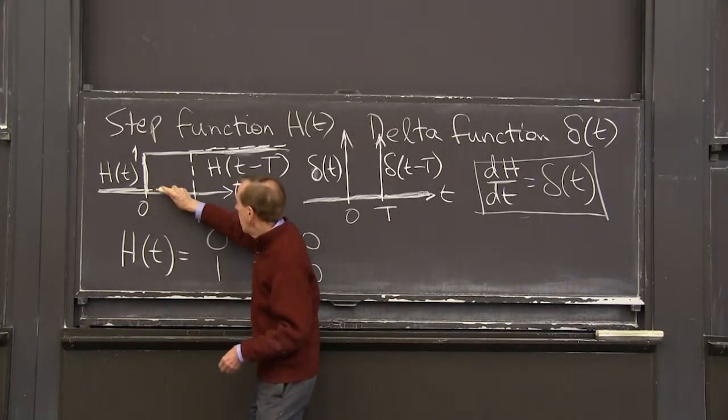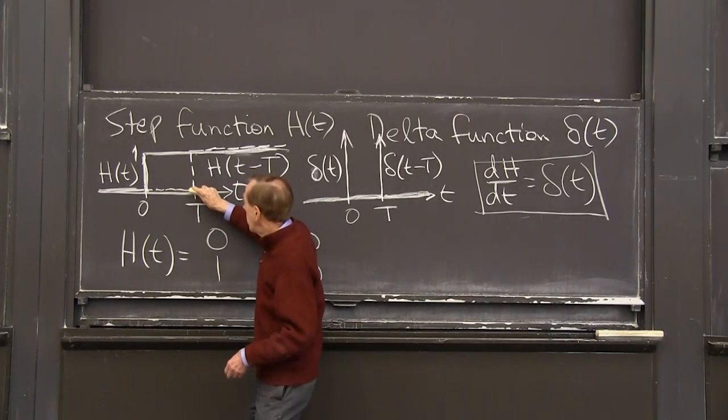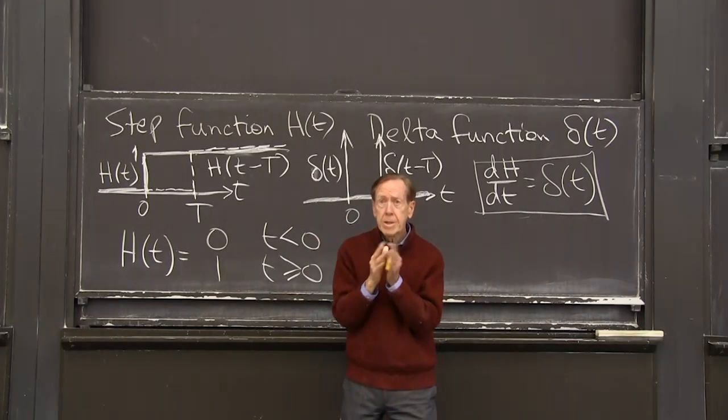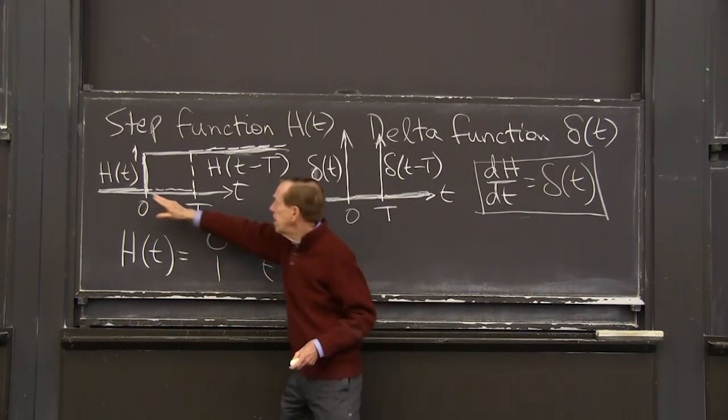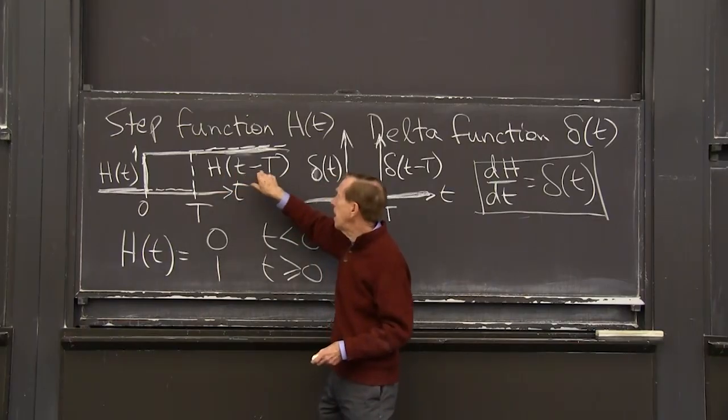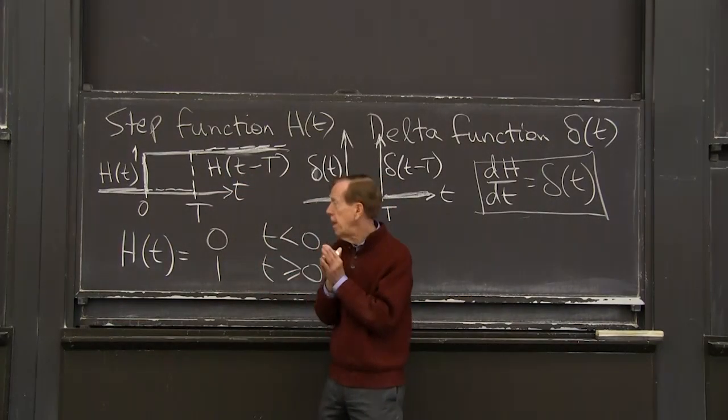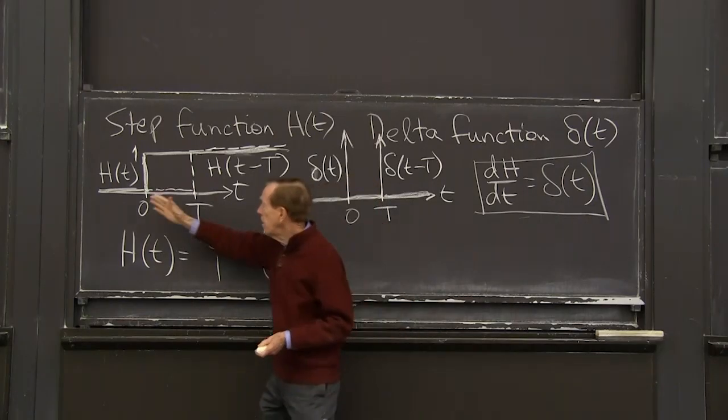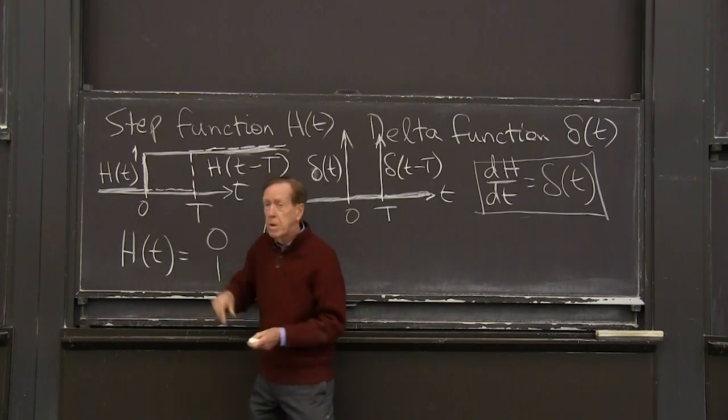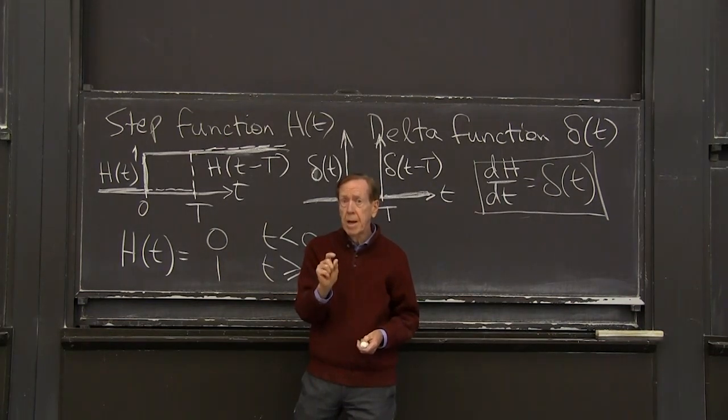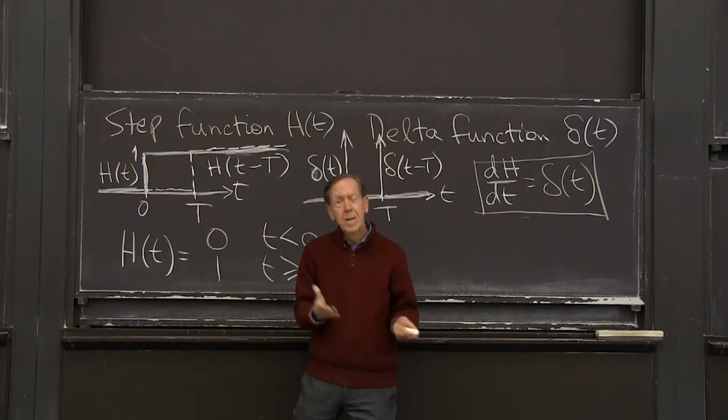And that's 0 at t equal to T. So the jump in dotted line, so the shifted step function will just shift over. That's the complete effect of changing from t to t minus a capital T, is just to shift the whole thing by capital T. OK. So keep your eye on the standard step function, which jumps at t equals 0, jumps by 1.